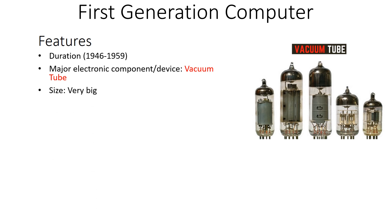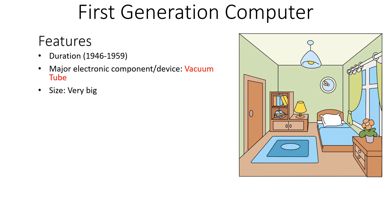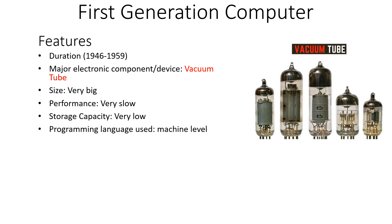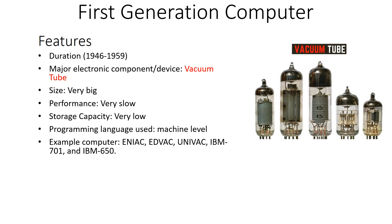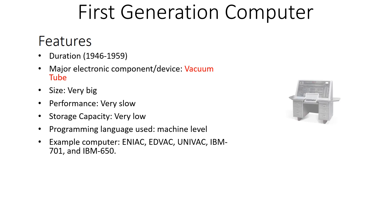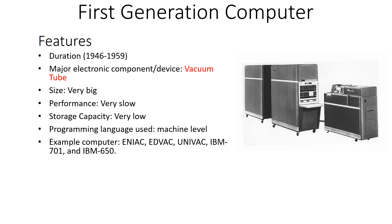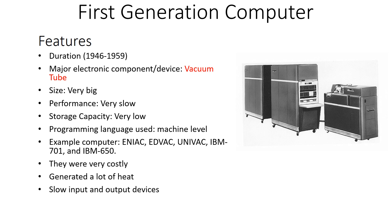The size of first generation computers was very big — large enough to cover a whole room. Their performance was very slow; they could not perform calculations with great speed. Storage capacity was also very low. They used machine level programming language. Examples include ENIAC, EDVAC, UNIVAC, IBM 701, and IBM 650. They were very costly and generated a lot of heat.